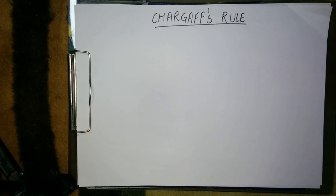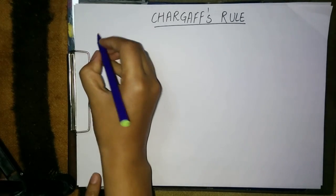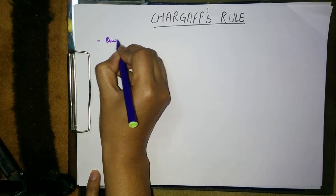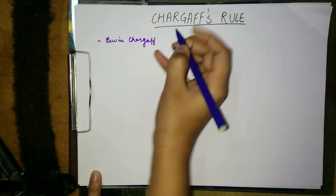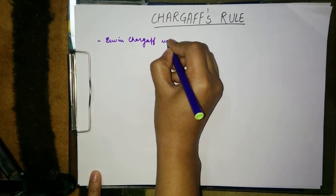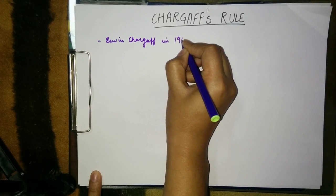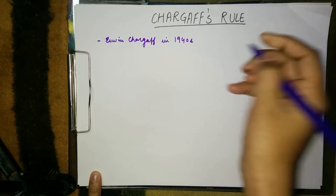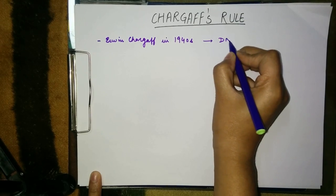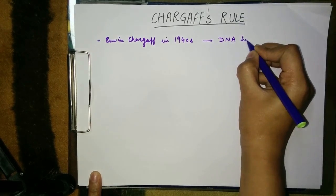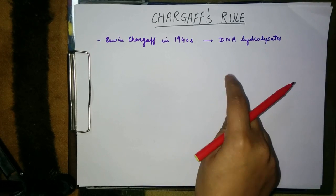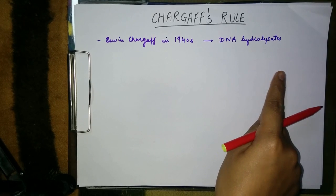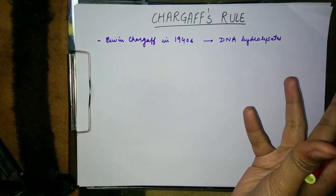The scientist named Irvin Chargaff, in the late 1940s, quantitatively analyzed the DNA hydrolysates from different species. He collected these DNA hydrolysate samples from different species and observed them.